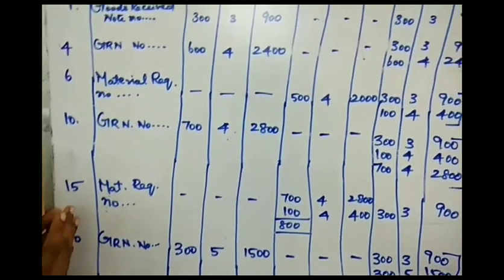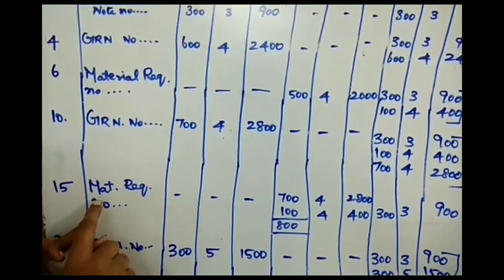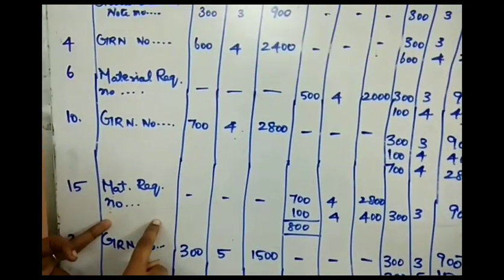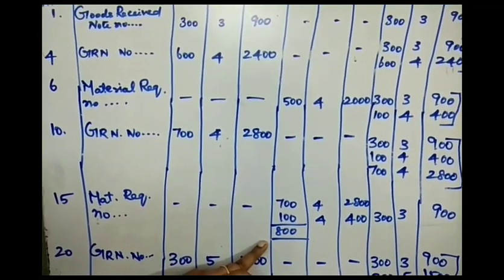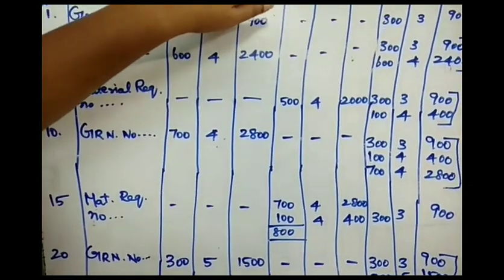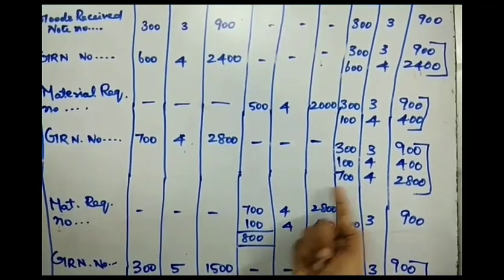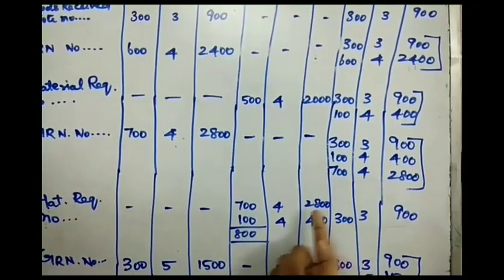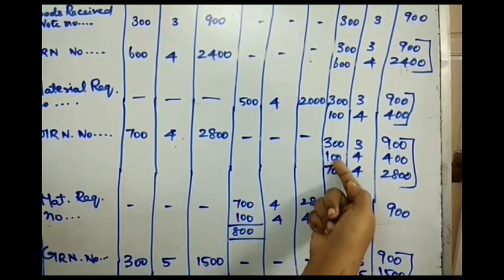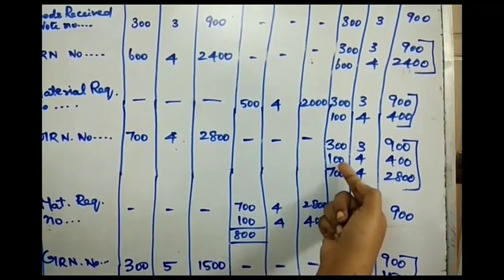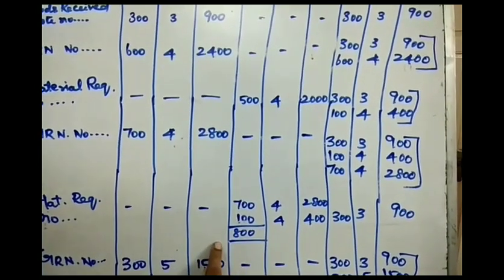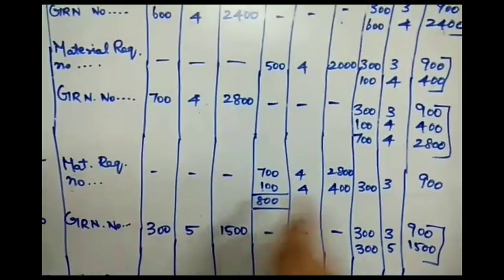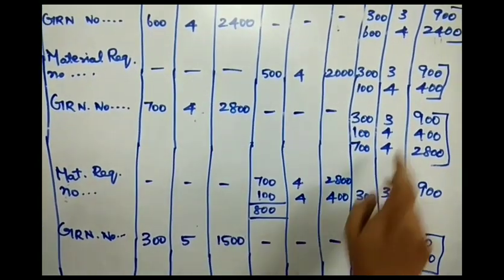On January 15th, there is an issue of 800 units, recorded under Material Requisition Note. Following LIFO, I take the latest transaction first: 700 units at ₹4 = ₹2800, then the next most recent lot of 100 units at ₹4 = ₹400, totalling 800 units issued. The remaining balance is 300 units at ₹3 = ₹900.